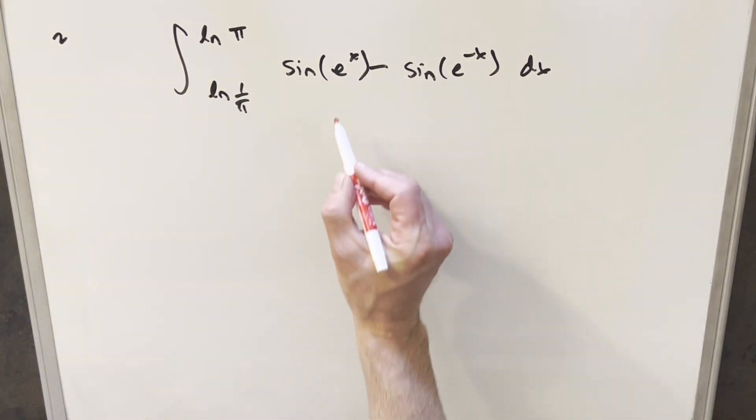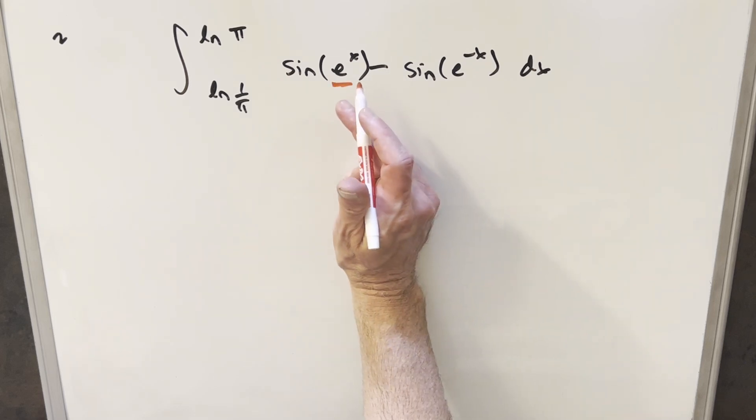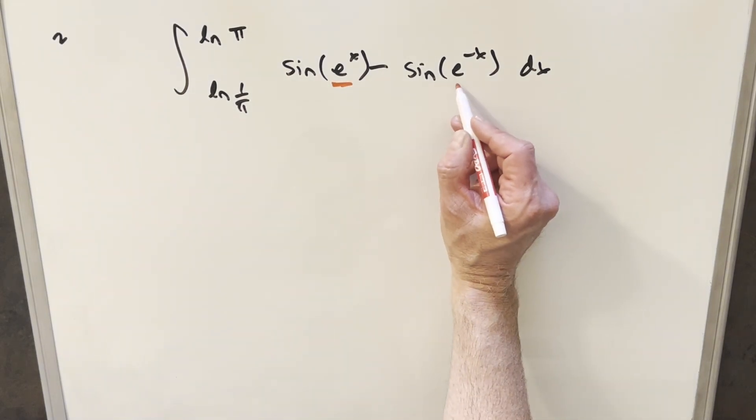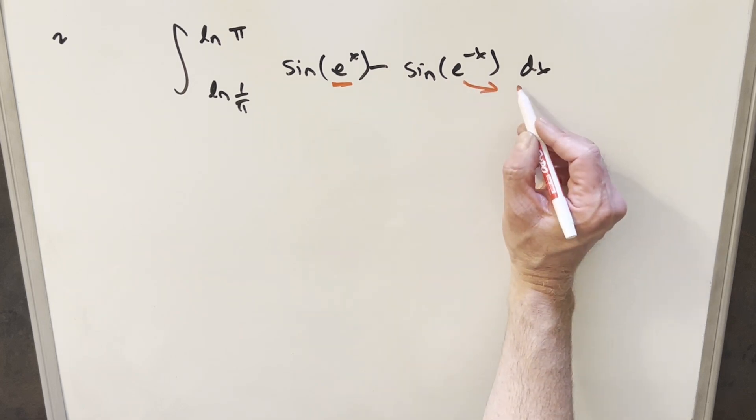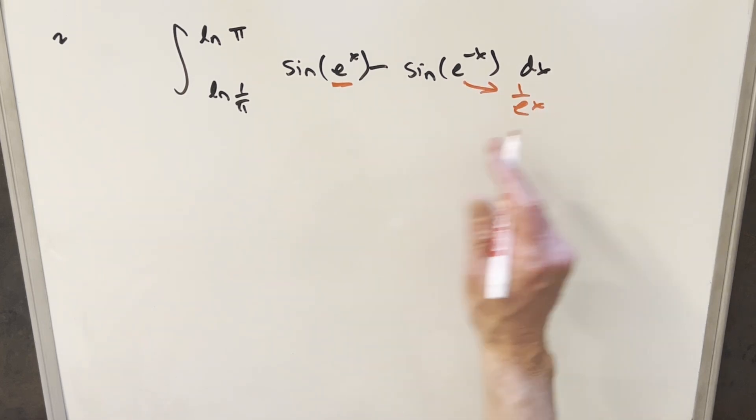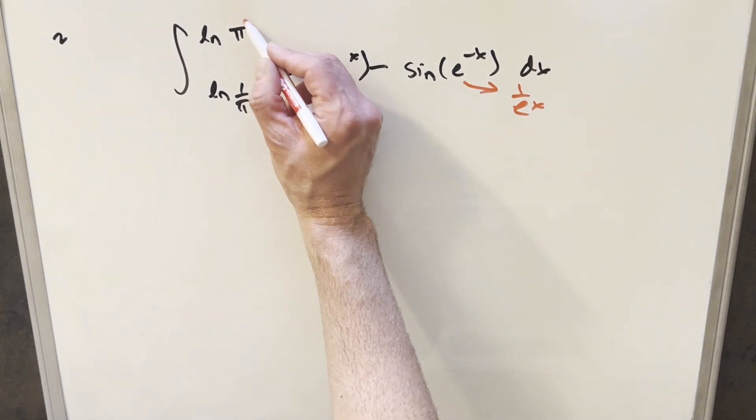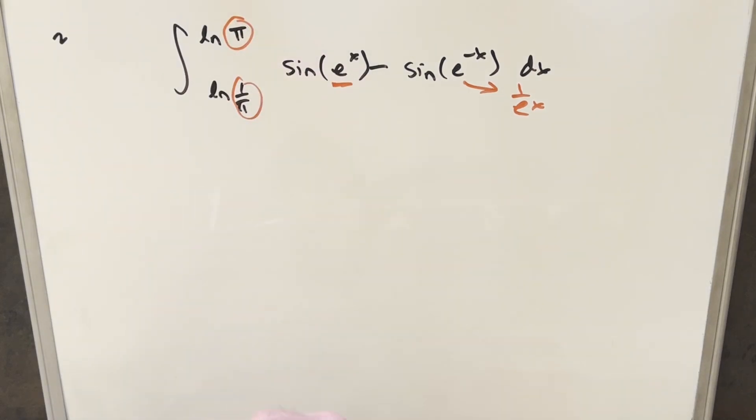And the reason I do that is because I want to do a u substitution. I'm going to make my u here e to the x, knowing that's going to simplify this expression. But really over here, e to the minus x, this is also, we can write this as 1 over e to the x. So we kind of have this symmetry going on where we have the reciprocal here, and then we have the reciprocal inside the bounds here. So let's see how this is going to work when I do this.